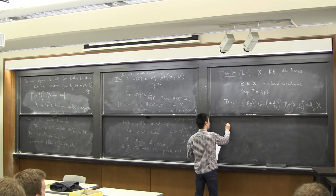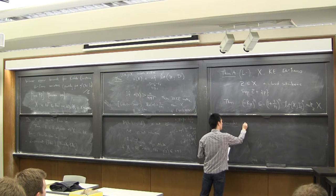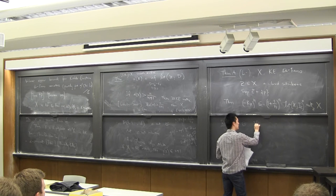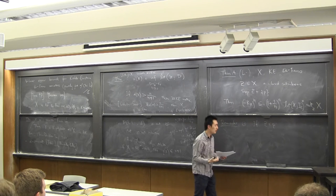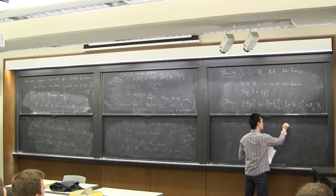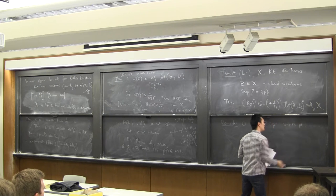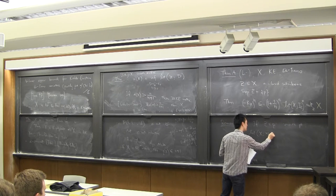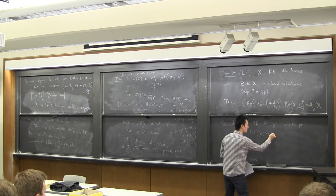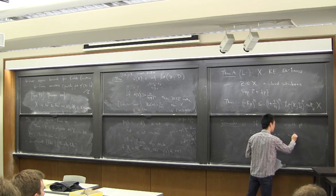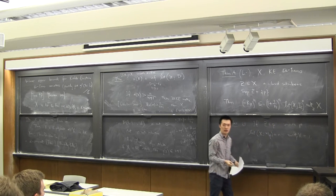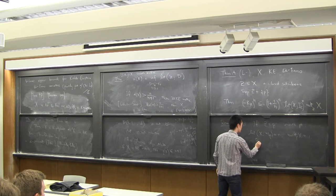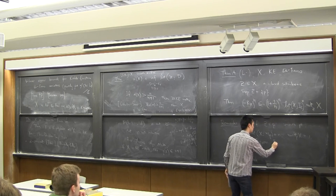Let me give some remarks on Theorem A. First, if you take Z equal to P — that is, the ideal of Z is the maximal ideal at a smooth point — then the log-canonical threshold of the maximal ideal at a smooth point equals n, and the multiplicity equals 1. So this formula recovers Fujita's upper bound.